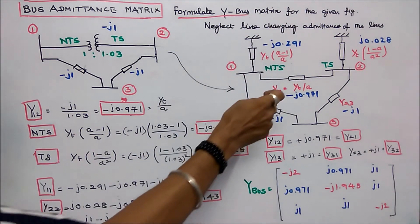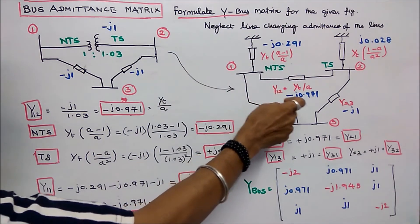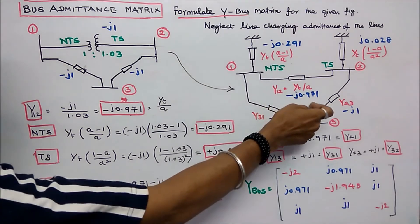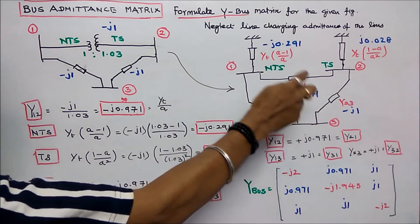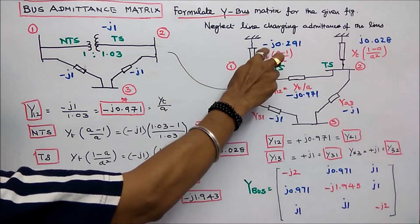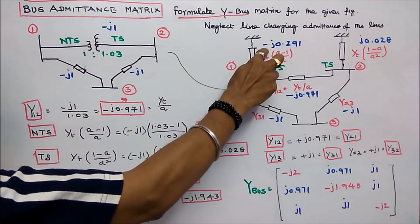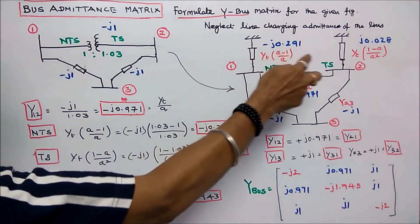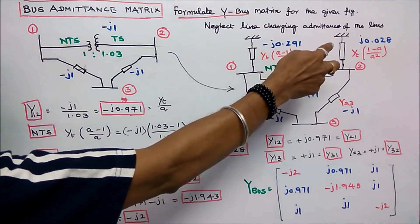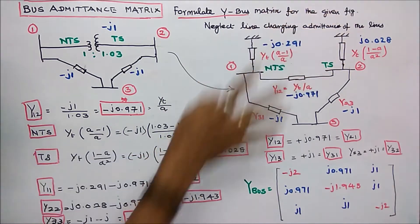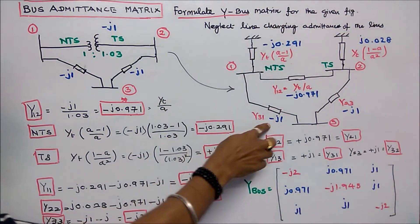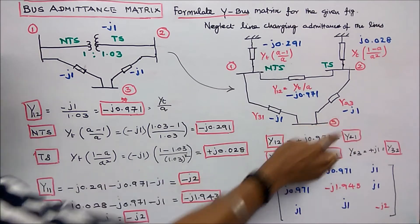So Y12 is minus J0.971. This admittance on the non-tap-setting side is minus J0.0291, and on the tap-setting side it is J0.028. The remaining two line admittances are minus J1 and minus J1.